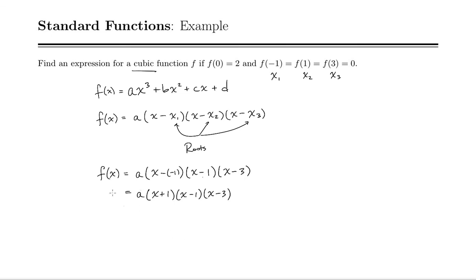Now I just need to know what a is. And they've told us one more piece of information. That's f of 0 equals 2. So f of 0 is 2. So I just plug in 0 into each of these x's. So I've got a times 1 times negative 1 times negative 3. Well that's 3a. So a equals 2 thirds.